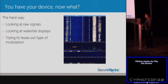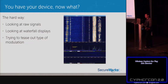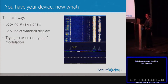So you have a device and you want to capture a signal — now what? The hard way is to look at the waterfall chart and try to make sense of the signals as they come in. There are entire websites dedicated to identifying signals from their waterfall appearance. Trying to tease out modulation this way is really difficult and involves a lot of troubleshooting.